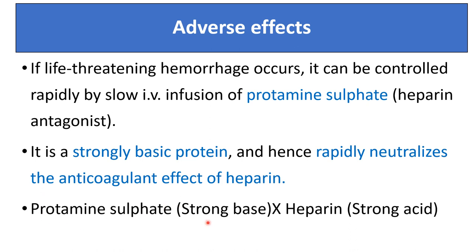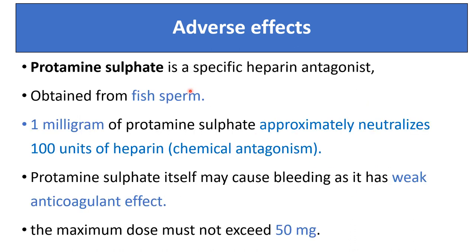Protamine sulfate is a strong base and heparin is a strong acid, making this a chemical antagonism. Protamine sulfate is a specific heparin antagonist obtained from fish sperm. One milligram of protamine sulfate approximately neutralizes 100 units of heparin. However, protamine sulfate itself may cause bleeding due to its weak anticoagulant effect, and the maximum dose should not exceed 50 milligrams.